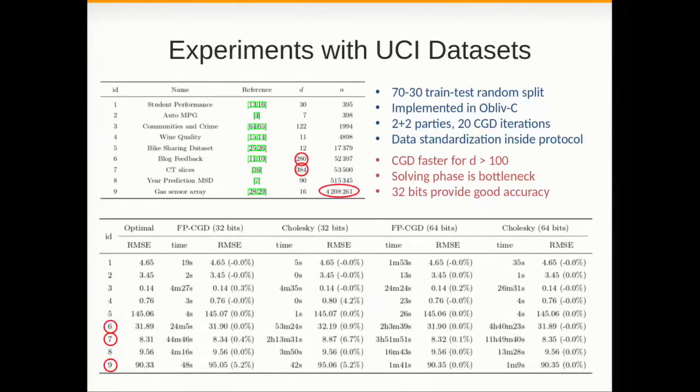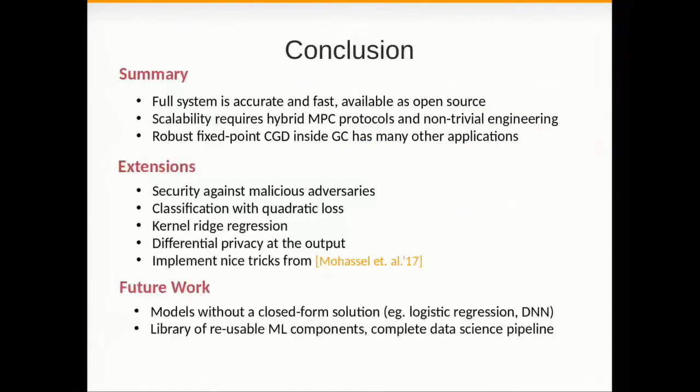In many cases 32 bits are enough for good accuracy. So this is for the task of prediction, not the task of solving a linear system. Results for that are also in terms of different condition numbers. Condition numbers of the matrix that are better and worse are also in the paper. So we analyze all the components of our solution in the paper.